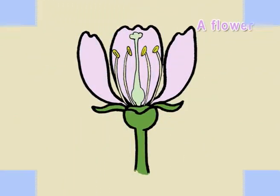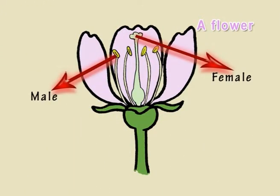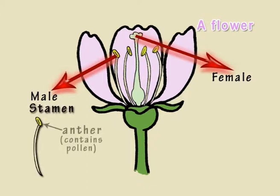A flower has male and female parts. The male part of the flower is called the stamen. It is made up of the anther, containing granules of pollen, and the filament, which holds the anther up.